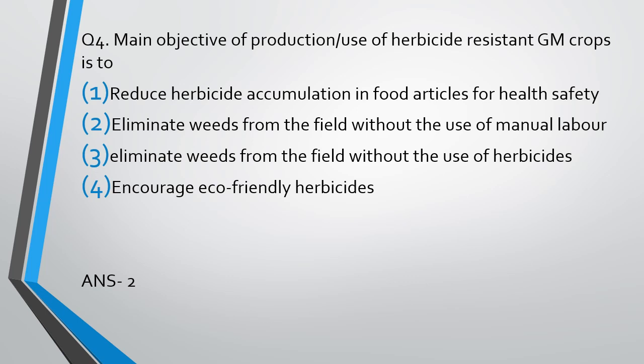The point to understand here is what herbicide-resistant GM crops means: the crop you cultivate would be resistant to herbicides, however the weeds growing there won't be resistant. So if you spray herbicide across the entire field, your crops — being resistant — won't get affected, but the weeds will get eliminated. Earlier, herbicides used to damage the crop as well, so weeds needed to be removed manually. Now with herbicide-resistant GM crops, we can spray herbicides that don't affect the GM crops but eliminate the weeds since they are not resistant.